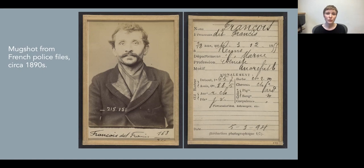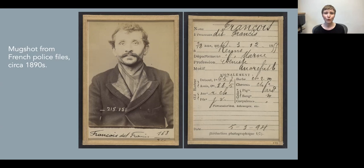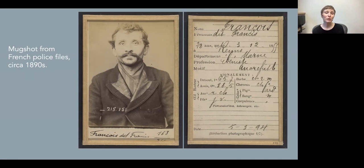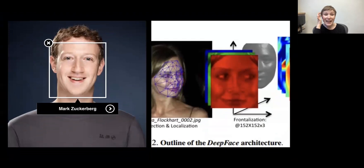With the mugshot, Bertillon came up with a new use for photography that wasn't predetermined when the medium was invented in 1839 — it's something that came into use over the course of the 19th century. By the late 19th century, photography had become closely linked to surveillance and early forms of facial recognition technology. This is a kind of prehistory of biometrics and photographic surveillance, and it's helpful to understand what came before in order to understand what's happening now.